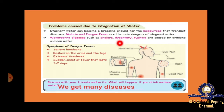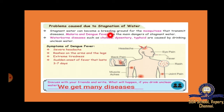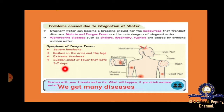We also learned about problems caused by stagnation of water. The problems include malaria, dengue, cholera, dysentery, and typhoid — these are the waterborne diseases. Malaria and dengue fever occur because mosquitoes breed in stagnant water. We also saw symptoms of dengue fever: severe headache, rashes on the arms and legs, extreme tiredness, and sudden onset of fever lasting 3 to 7 days.